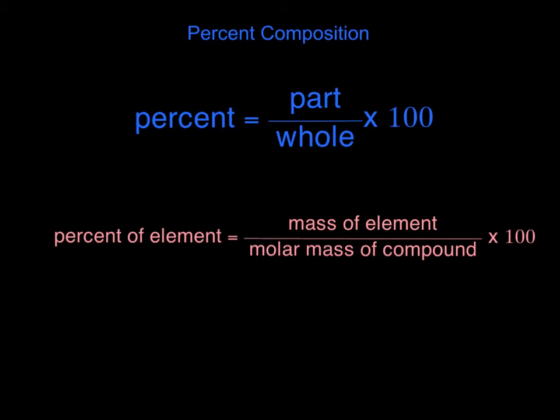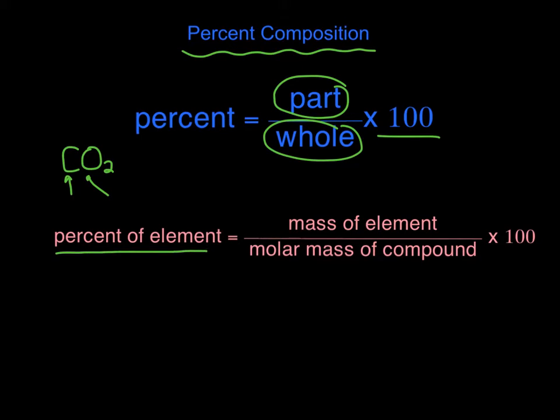In this video, let's talk about percent composition. The percentage of something is just the part over the whole times 100. So the percent composition is the percentage by mass of each element in a compound. For instance, if I had CO2, I want to know what percentage is carbon and what percentage is oxygen. So the percentage of an element is just the mass of the element from the periodic table divided by the molar mass of the whole compound times 100.